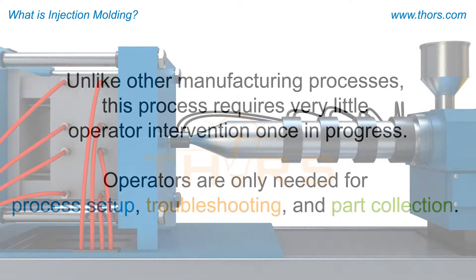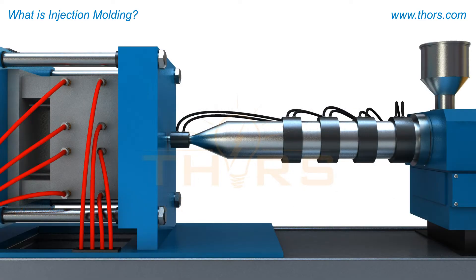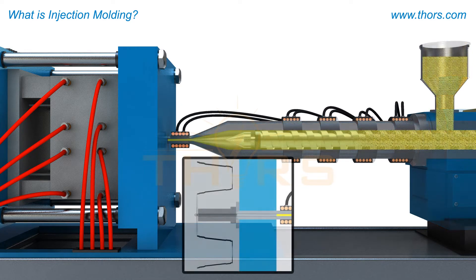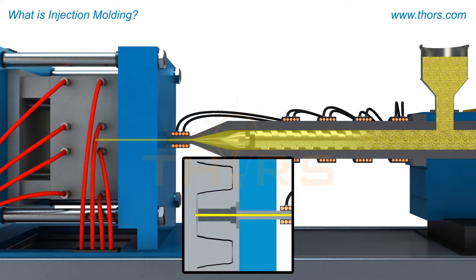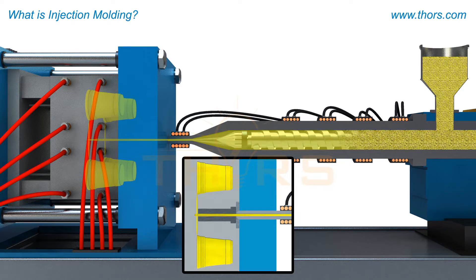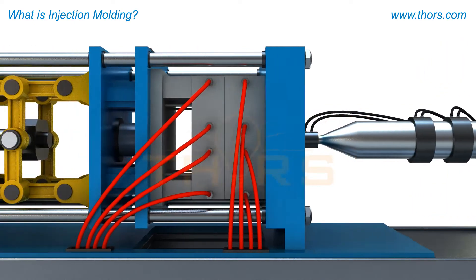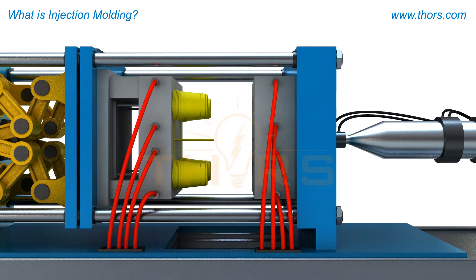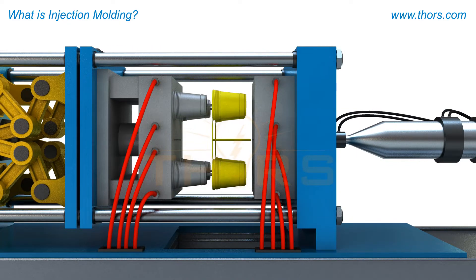The basic concept of injection molding is to take a solid plastic material, melt it into a liquid during plastification, force this liquid into a three-dimensional cavity during injection, and solidify the material into a part during cure and ejection.